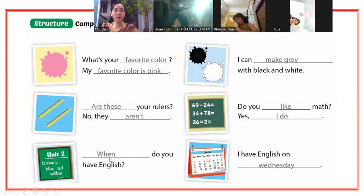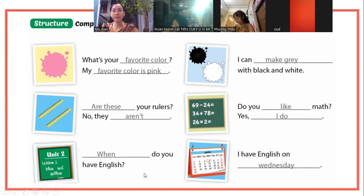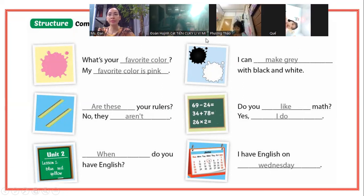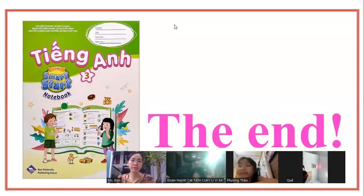Ở đây là môn tiếng Anh: When do you have English? Khi nào bạn có môn tiếng Anh? Các bạn nhìn vào trong hình ở đây. I have English on Wednesday - thứ tư. Vậy là chúng ta xong bài rồi.